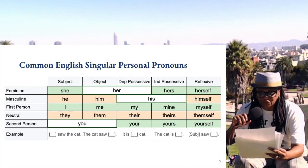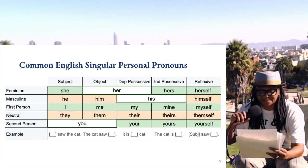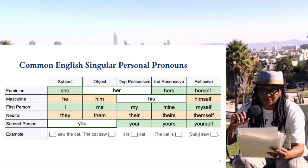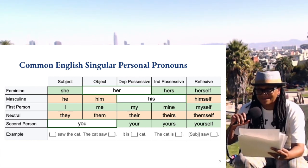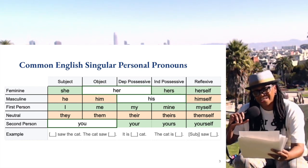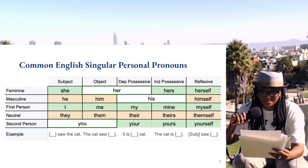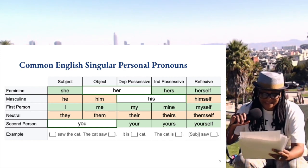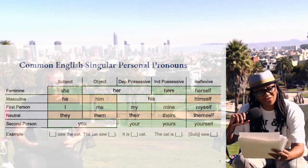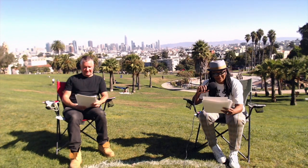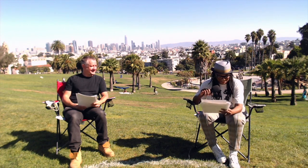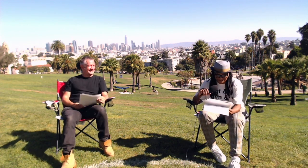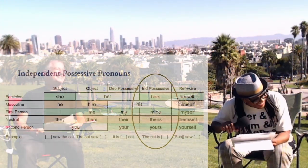In some cases we use the same word for two different paradigms. For example, we use 'her' for both object and dependent possessive, and we use 'his' for both the dependent and independent possessives. Have you ever noticed the differences between she/her/hers, he/him/his, and they/them/their/theirs? Most English speakers don't consciously realize these differences.